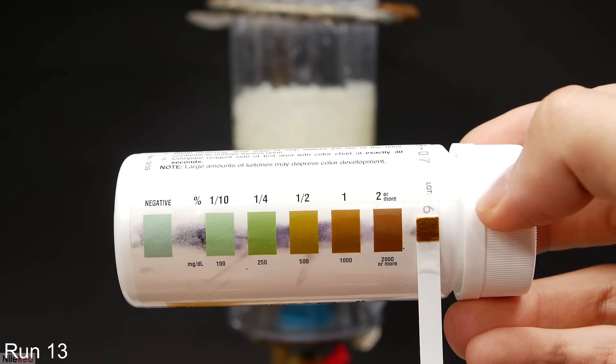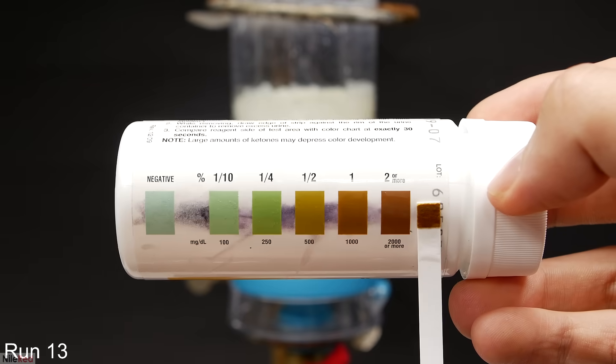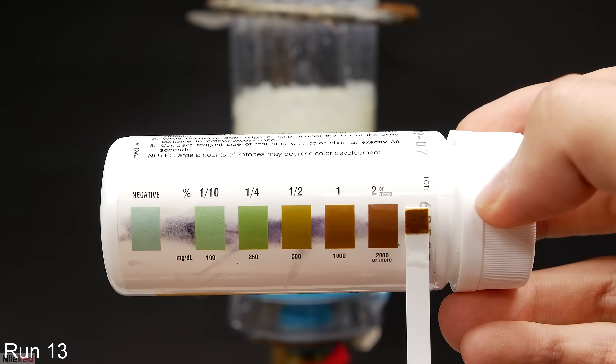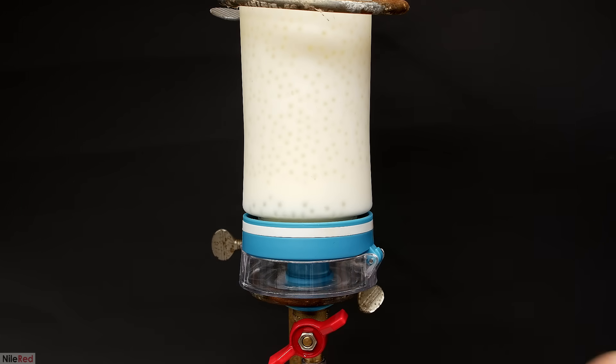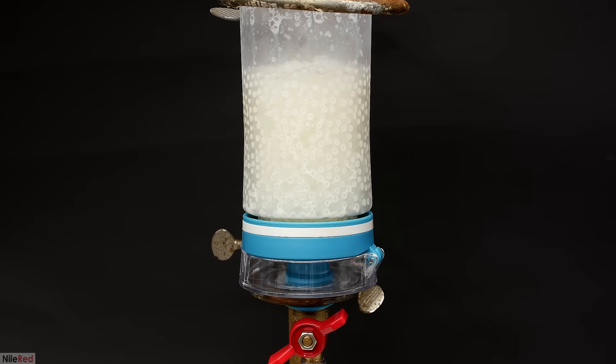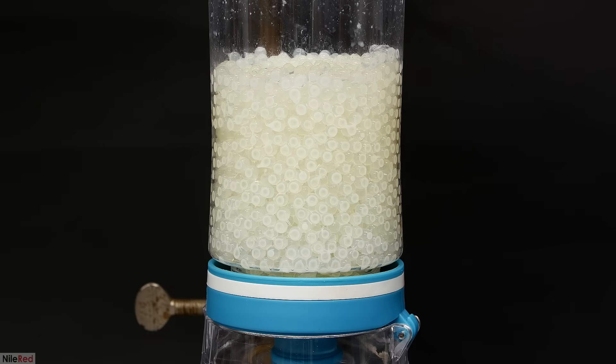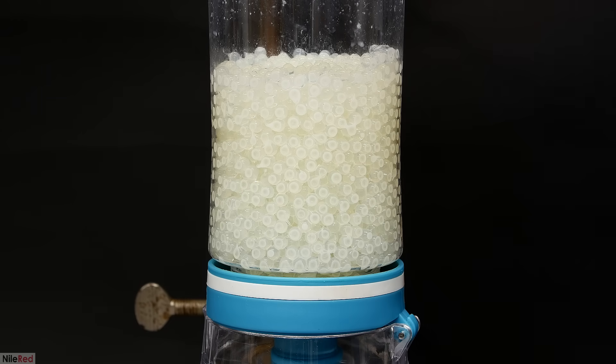In any case, in total I did about 13 runs just to try to hydrolyze as much as possible. Then everything was drained into a beaker and temporarily put in the fridge. The beads that are left over in the filter thing can then be used to process more milk if I wanted to, but I don't.